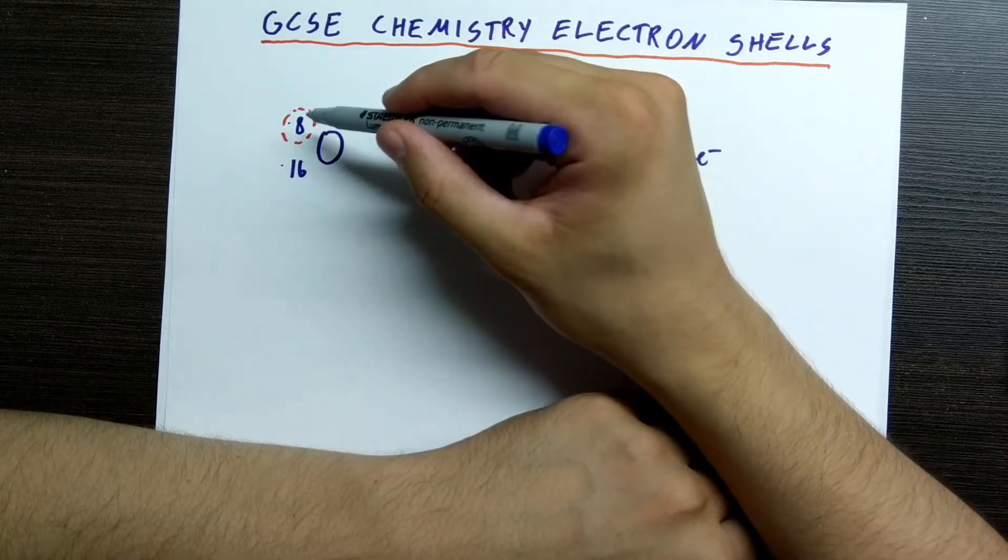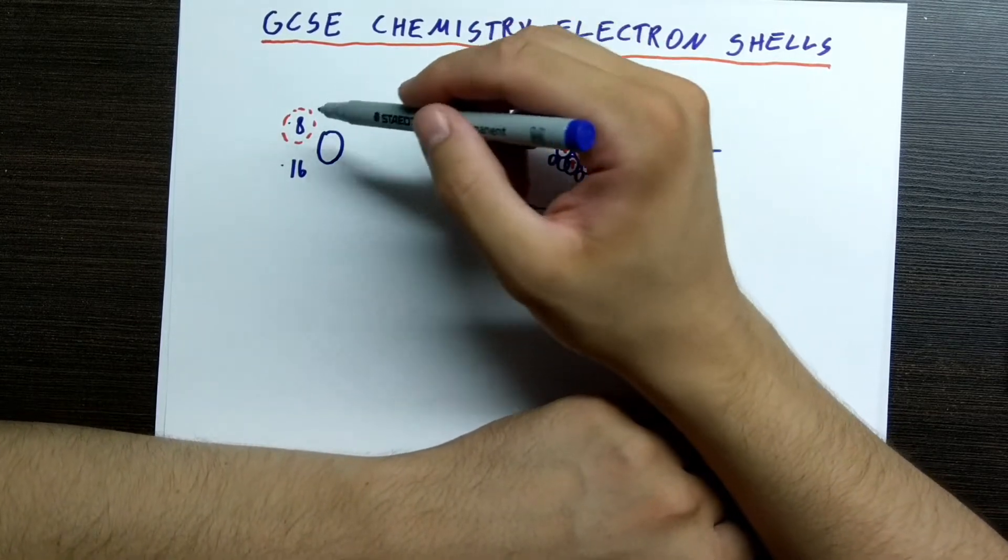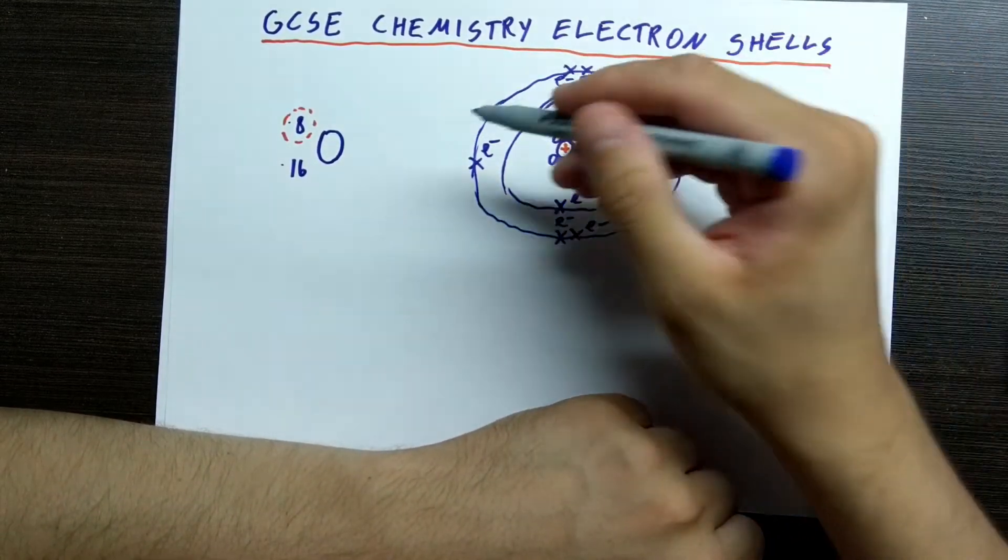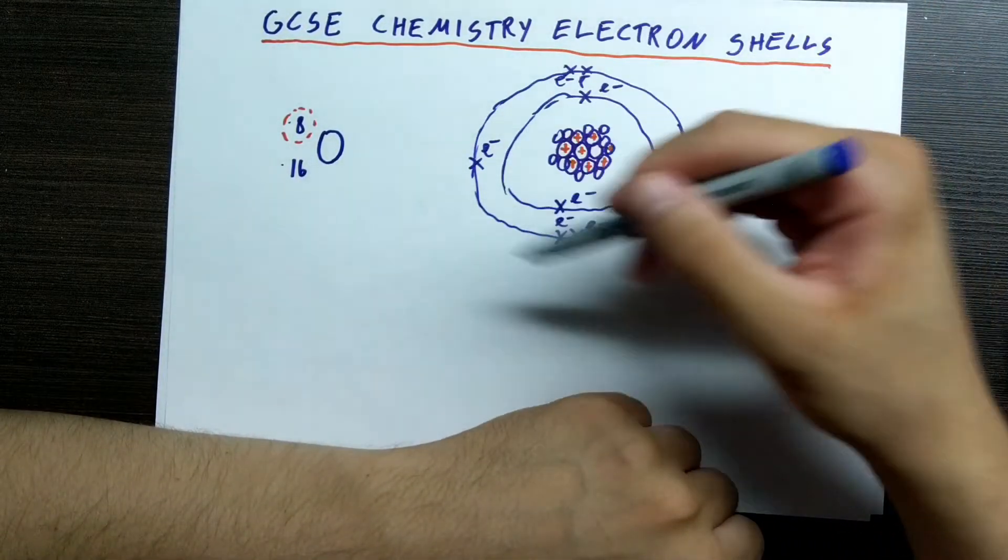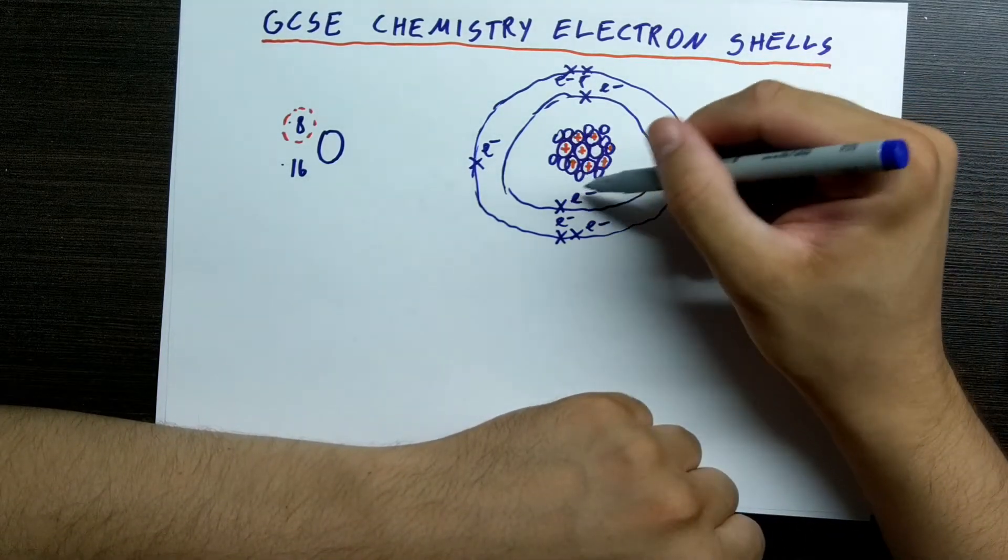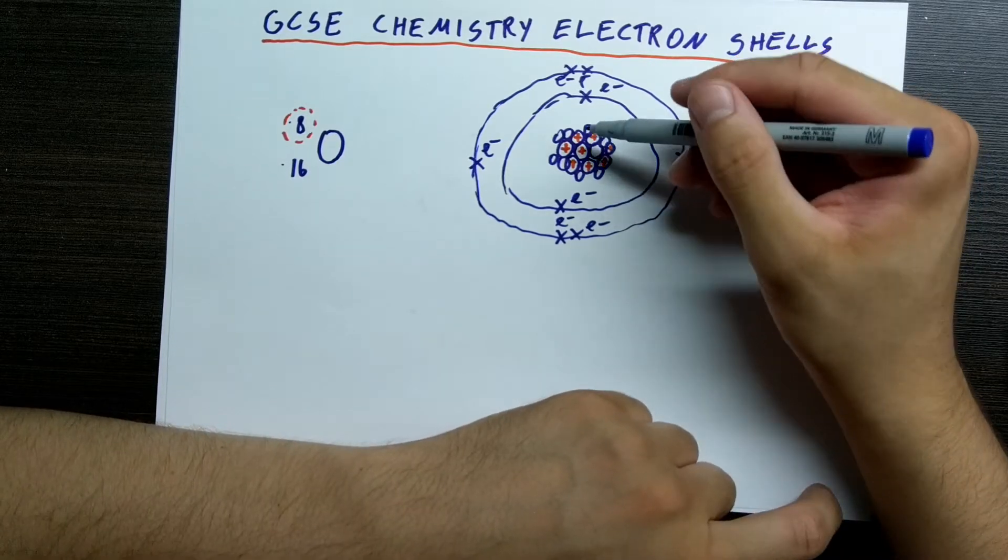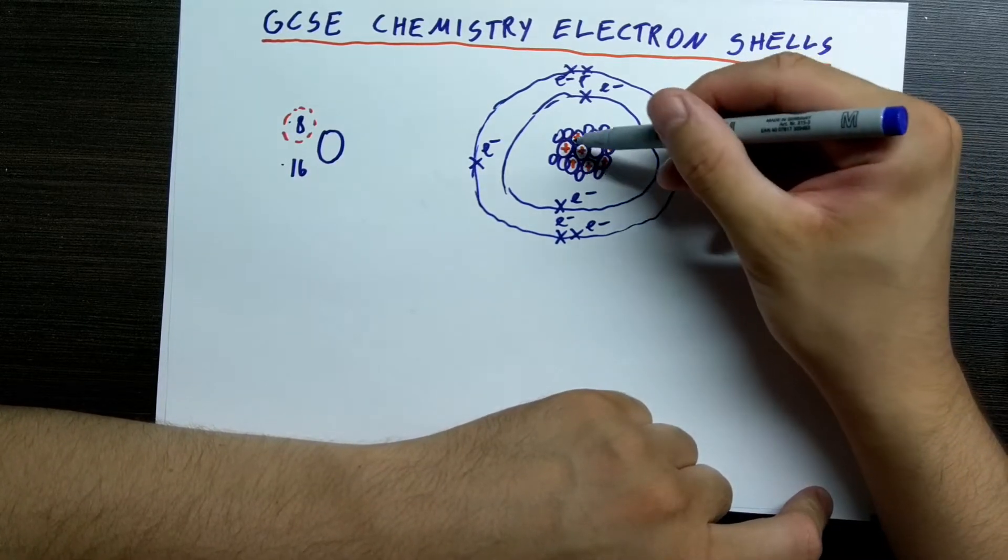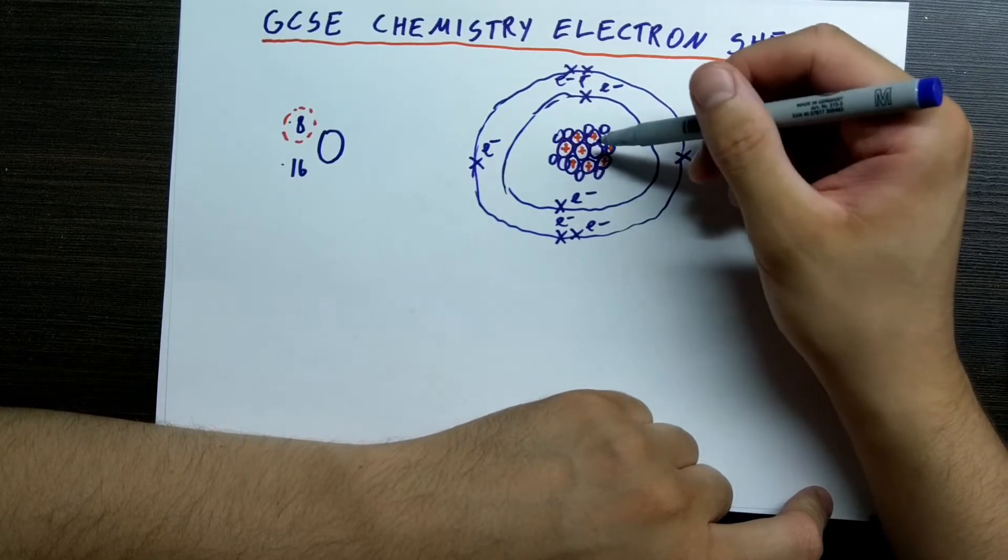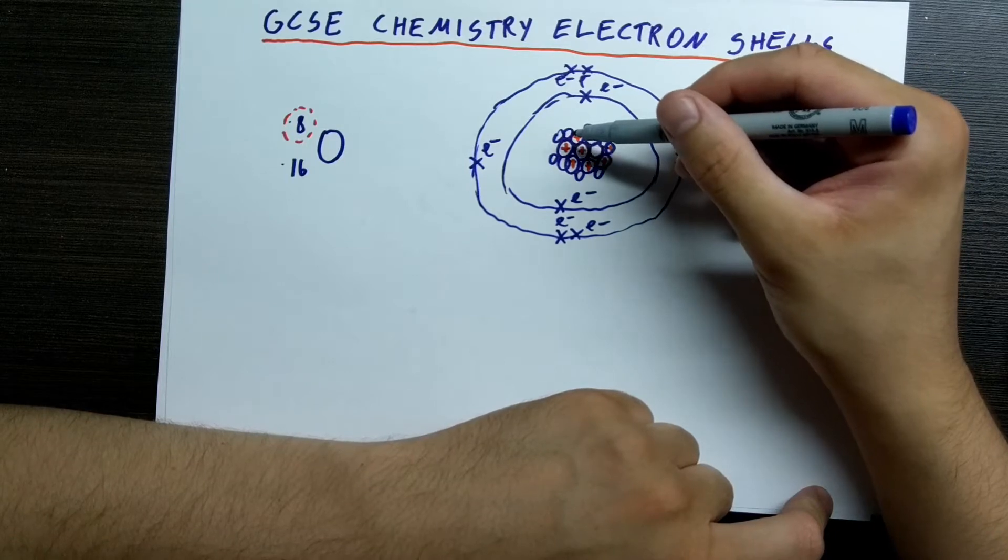The atomic number will give us the amount of protons that we have in oxygen. And this is important because if we look at the structure of oxygen, or any atom for that matter, in the center of such an atom we have an atomic nucleus, which consists of protons with a positive charge and neutrons with no net charge.